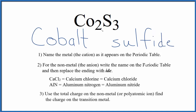So at this point we have the name cobalt sulfide for CO₂S₃. But cobalt is a transition metal, so we need to write the charge between the names. Sulfur is in group 16, sometimes called 6A, and has a charge of 2 minus. We have three of them, so 3 times 2 minus gives us 6 minus. Cobalt then needs a 6 plus charge, so 2 times 3 plus gives us 6 plus.